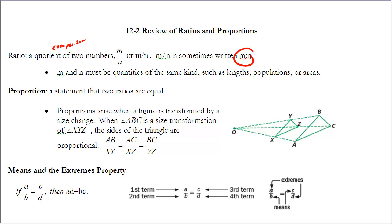In order for us to have a ratio, m and n must be quantities that are of the same kind, such as lengths, perimeters, populations, areas, but they have to be something that is of the same kind.